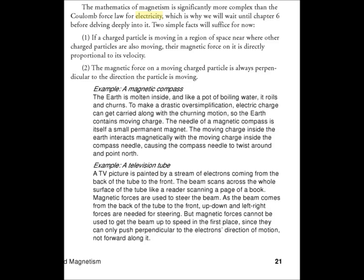Example. A television tube. A TV picture is painted by a stream of electrons coming from the back of the tube to the front. The beam scans across the whole surface of the tube like a reader scanning a page of a book. Magnetic forces are used to steer the beam. As the beam comes from the back of the tube to the front, up, down, and left-right forces are needed for steering. But magnetic forces cannot be used to get the beam up to speed in the first place, since they can only push perpendicular to the electron's direction of motion, not forward along it.